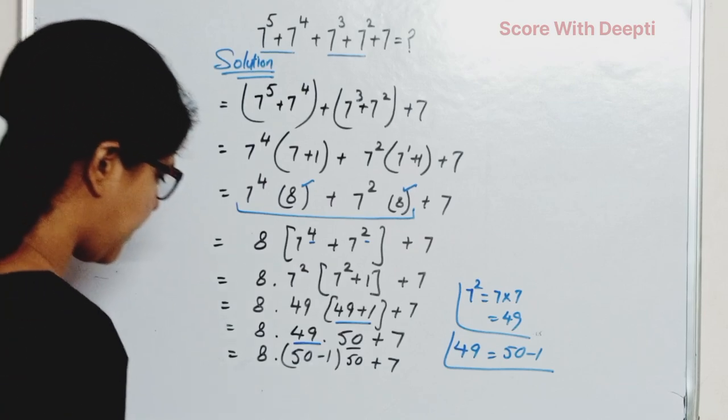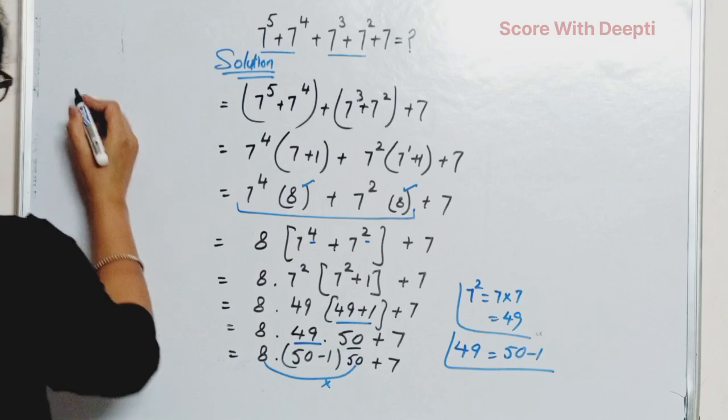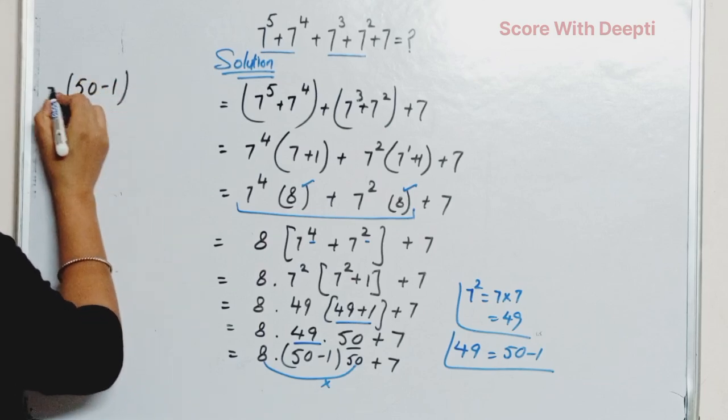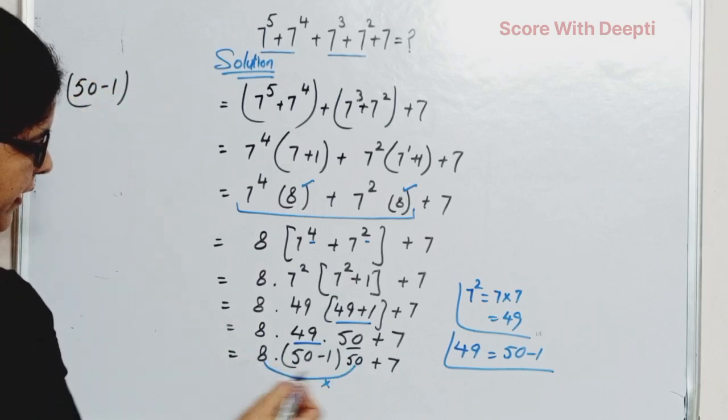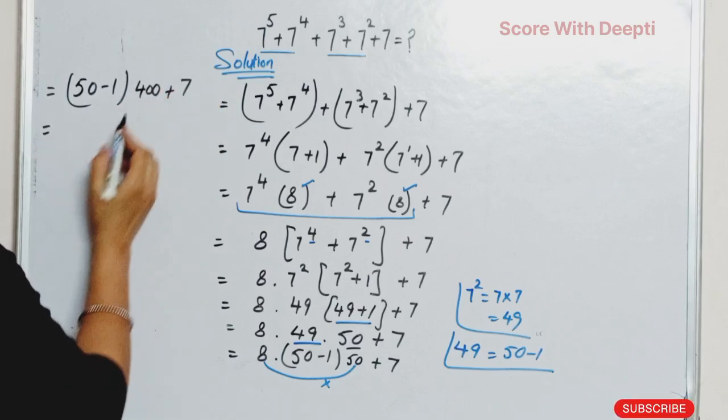Next, we multiply 8 with 50 and write (50 - 1) as it is and multiply 8 with 50, we get 400 plus 7.